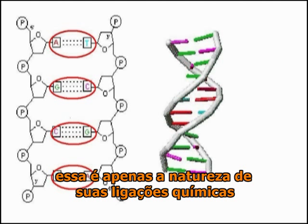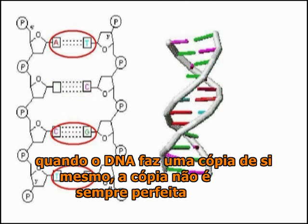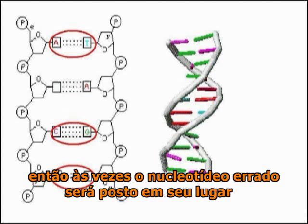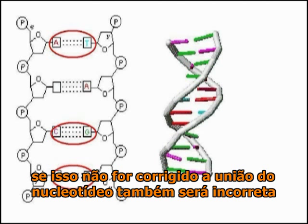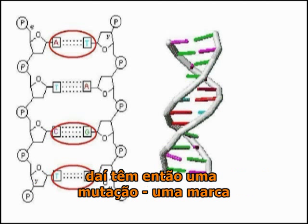That's just the nature of their chemical bonds. When DNA copies itself, the copies aren't always perfect, so sometimes the wrong nucleotide will be put in place — in this case, adenine instead of cytosine. If that isn't corrected, the pairing nucleotide will also be wrong. So you've got yourself a mutation, a marker.